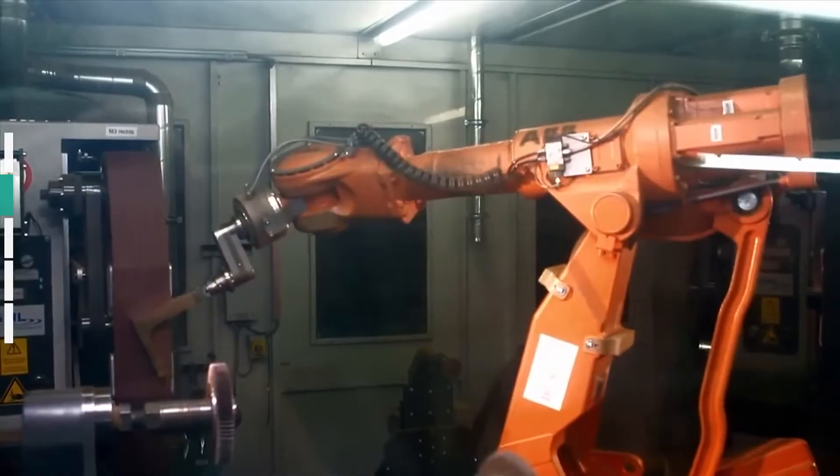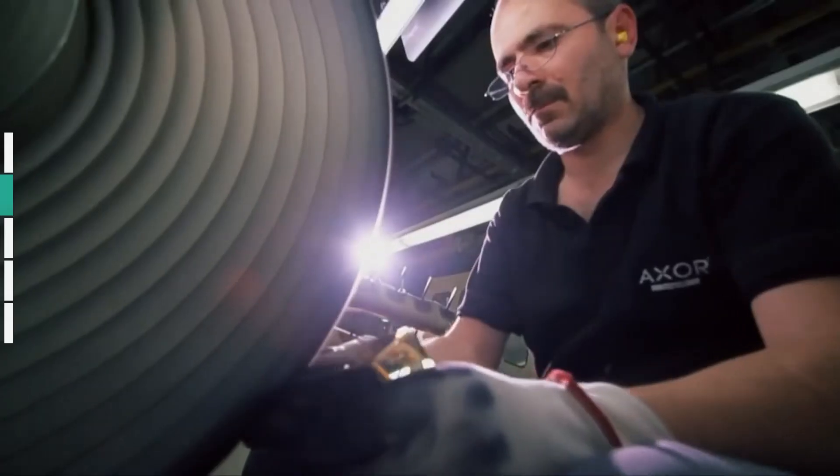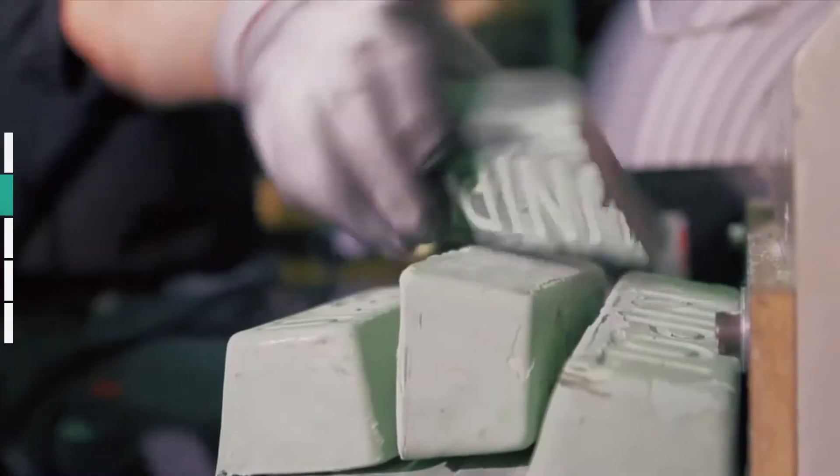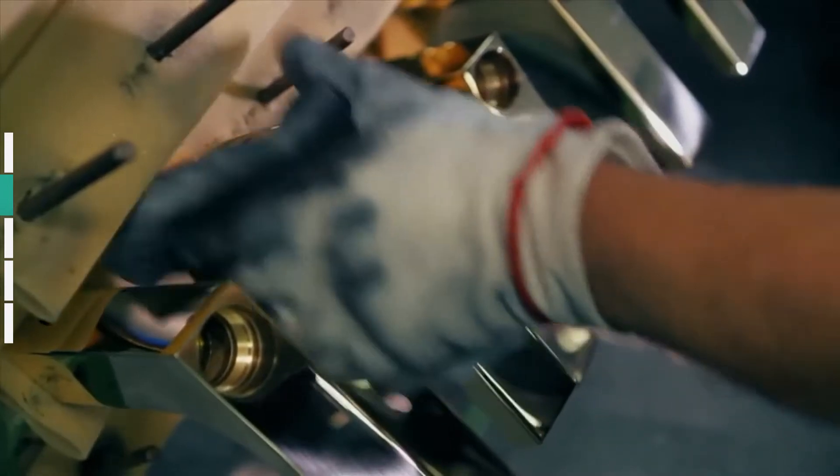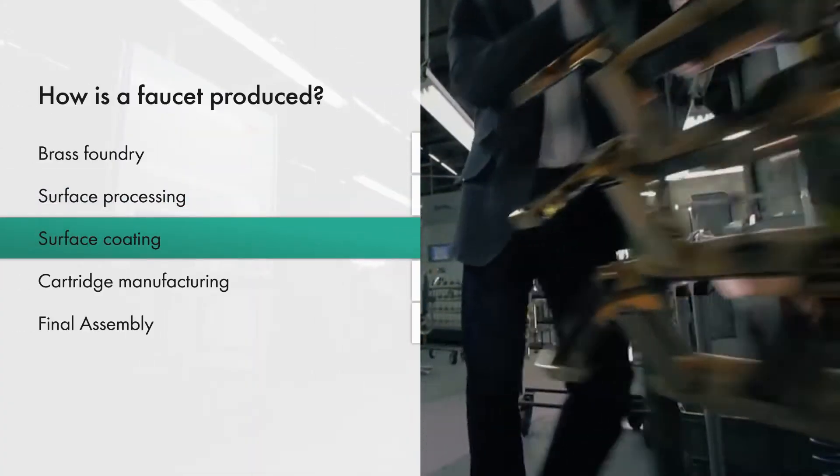These processes again involve high-tech machines. At Hansgrohe, there are mixer designs for which precise manual processing is also required. Once the surface has been fully smoothened, it's polished to a high-glass finish with a special paste. The mixer body now moves on to the next manufacturing stage, where it is refined, the surface coating department.